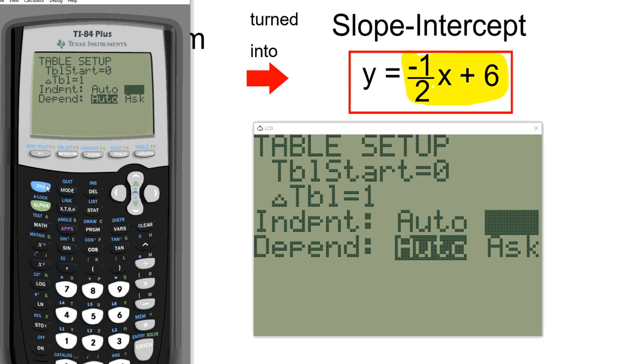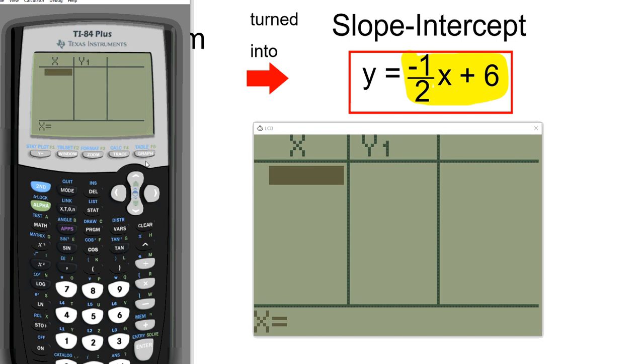Now after that, all that we have to do is hit second and table, and here is our table right there. If you want the X to be a 0, type in 0 right now, and you'll see it sitting right here at 0, and then hit enter, and instantly you will see that 6 popped up.